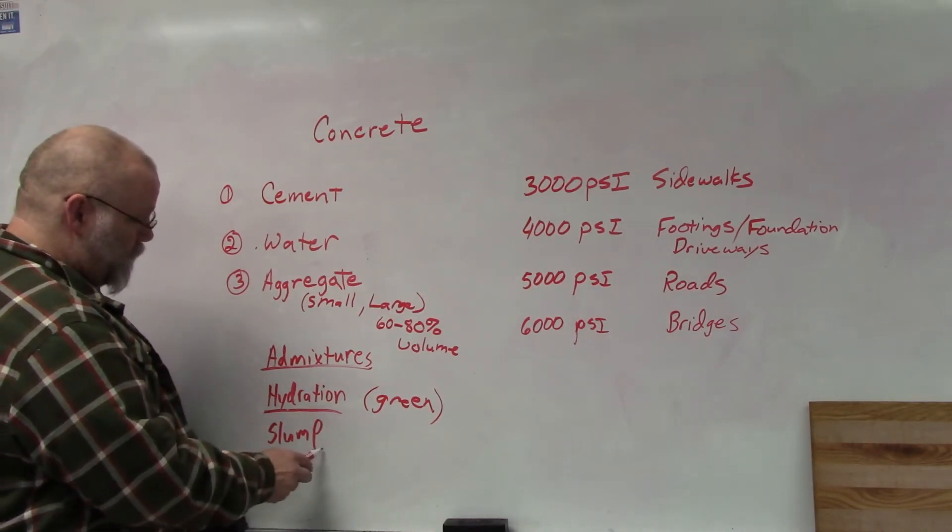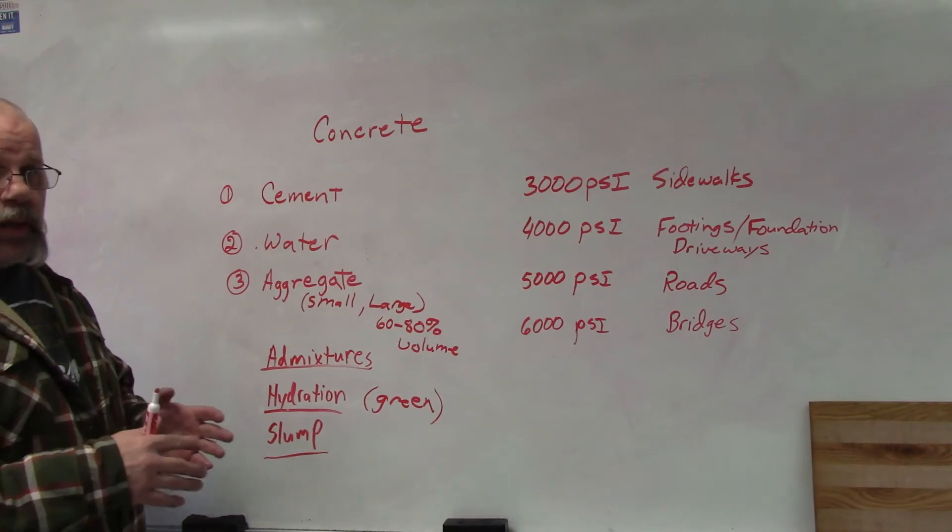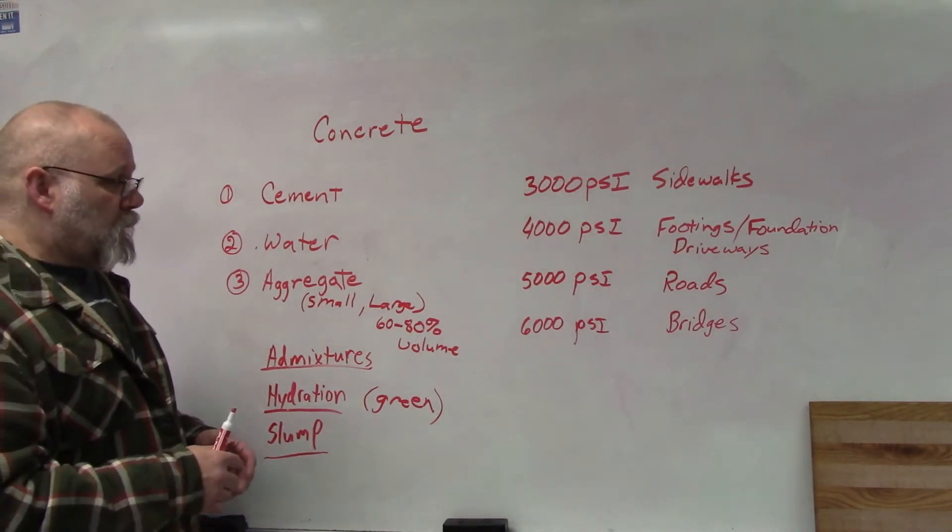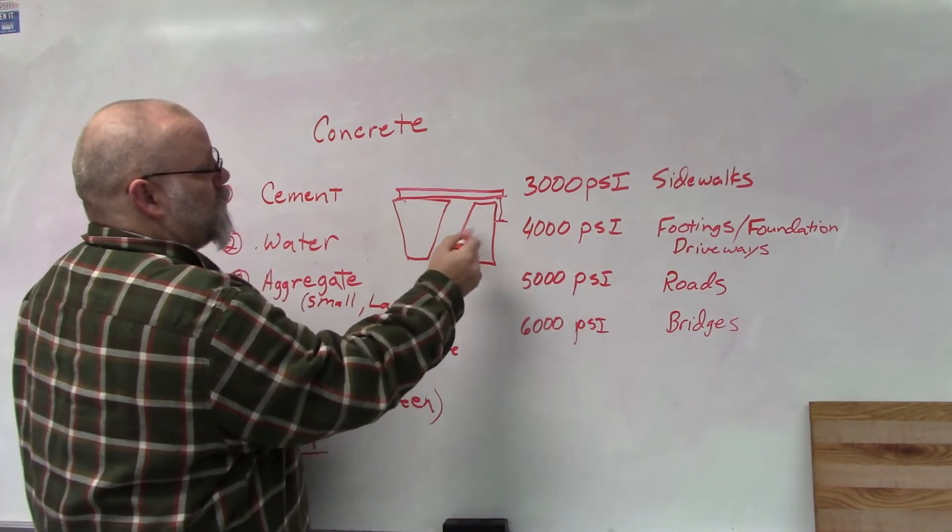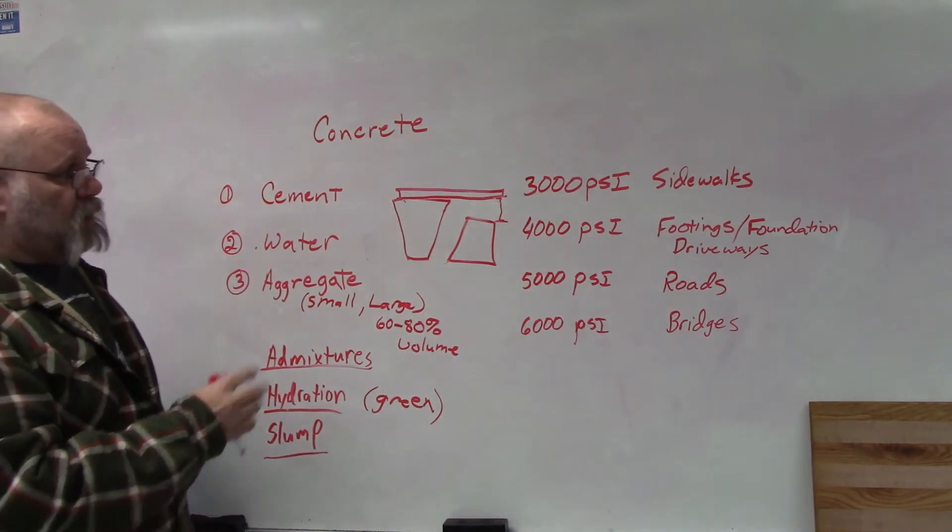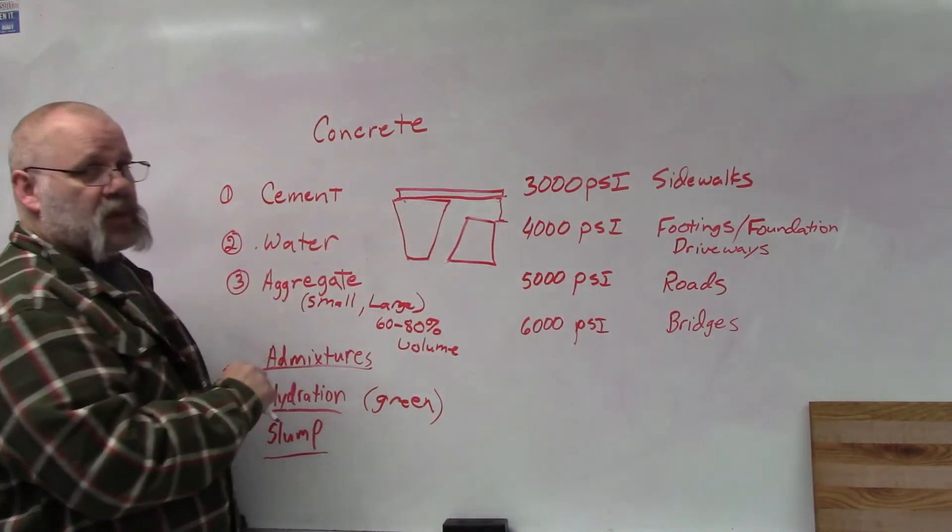The other thing on here is slump. Slump has to do with how liquidy the concrete is when it's being placed. The process of figuring slump is taking a metal tube or a funnel like this, filling it full of concrete, and then tipping it over so it sits in a pile like this. A straight edge runs across, and then they measure the distance from the bottom to the top of the slump after the concrete is sat there for a while. That distance right there is called the slump.